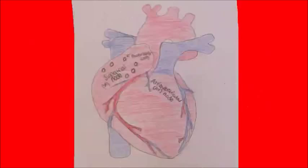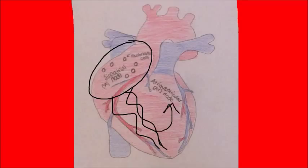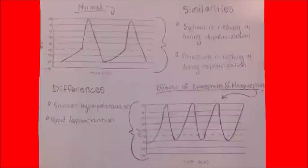The sinoatrial node contains the pacemaker cells of the heart. These pacemaker cells determine heart rate by sending electrical impulses to the atrioventricular node. The speed of these electrical impulses are what speed up heart rate. In order to understand how the heart rate is impacted by epinephrine and norepinephrine, it is necessary to understand how a normal heart rate appears.